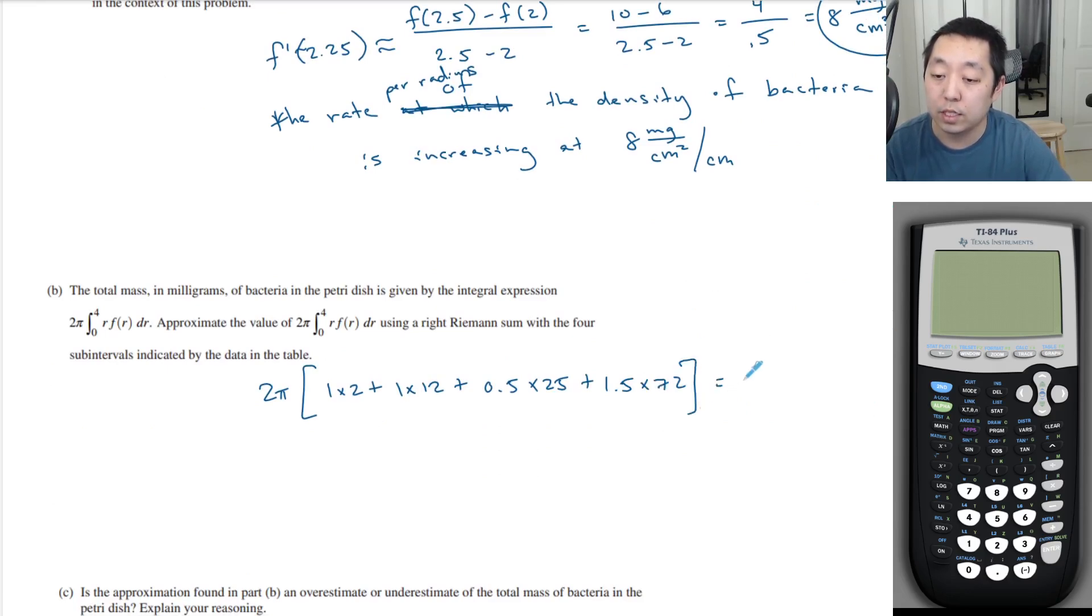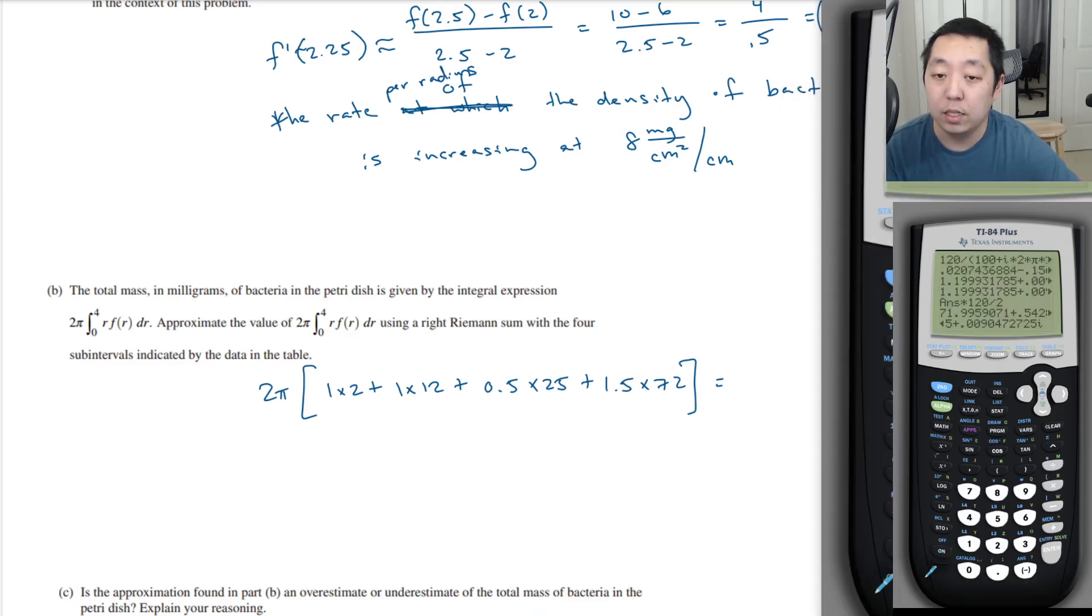Okay, so that's the sum I would want to calculate. I'm still going to leave it in terms of pi. You don't have to. Well, no, actually, because it's an approximation, why don't we just plug that in. 2 plus 12 plus, that's 12.5, and I'll just type it in, plus 1.5 times 72. All right, 845.08.